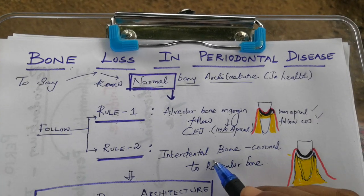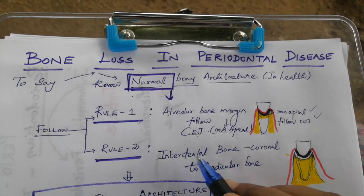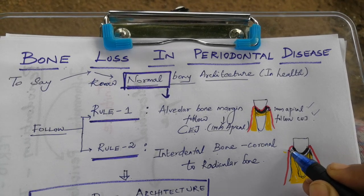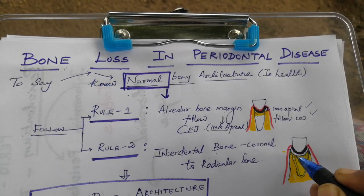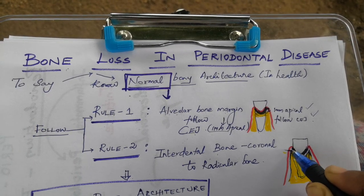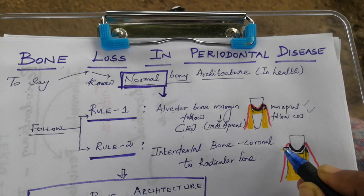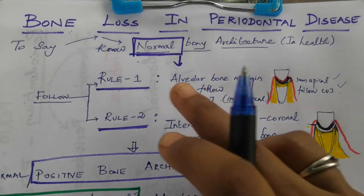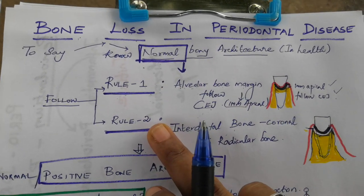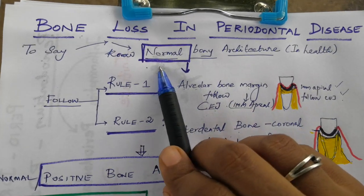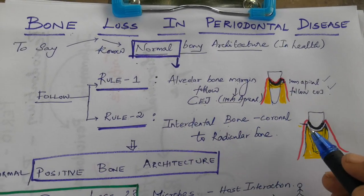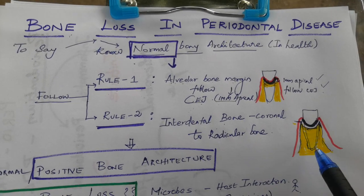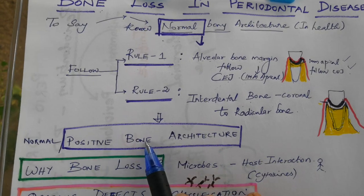The second rule is that the interdental bone should be coronal to the radicular bone. The interdental bone level must be above the radicular bone level. Both of these rules must be satisfied for a normal bony architecture, which we call positive bony architecture.